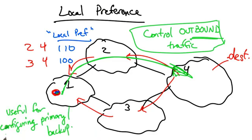This is extremely useful for configuring primary and backup routes. For example, here, the route through AS2 might be the primary route, and the route through AS3 is the backup route.